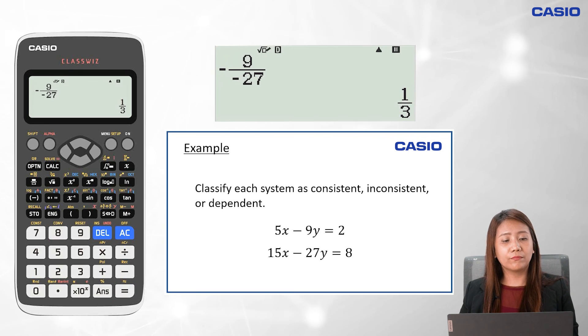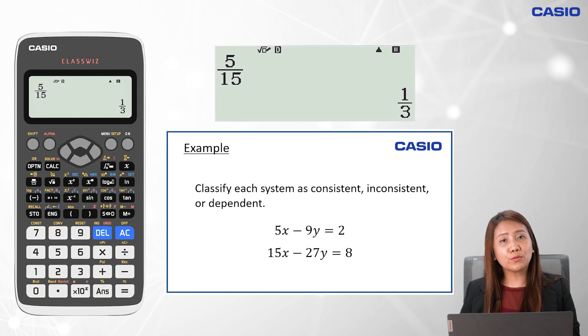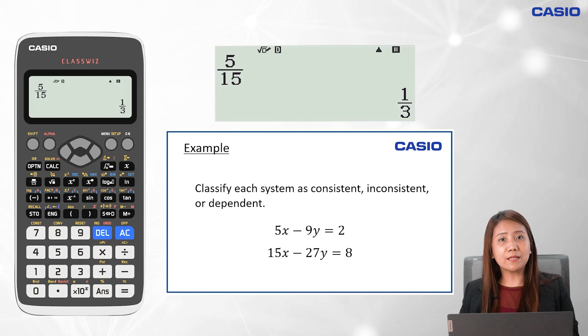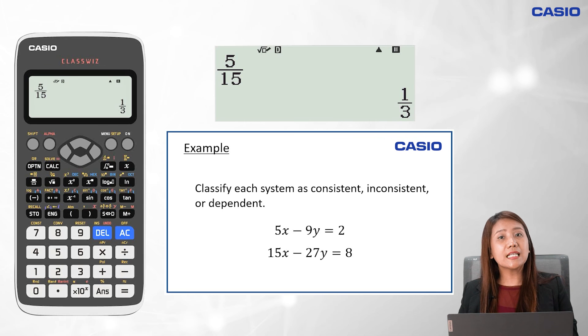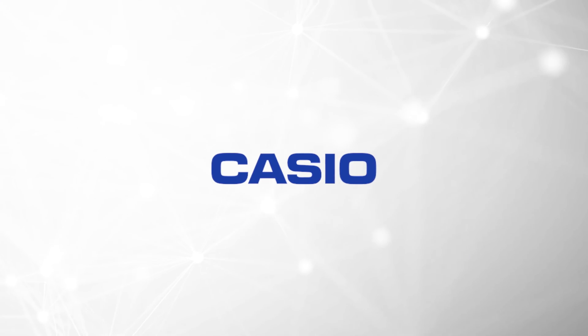5 over 15 is 1 third. Negative 9 over negative 27 is 1 third. 2 over 8 is 1 fourth. Since the ratio of the coefficient of x and the coefficient of y are equal, but the ratio of the constant term is not equal, therefore the graph defines parallel lines for this system. This means the kind of system we have is an inconsistent system. That's it for now. We are positive that our teachers will be able to share this wonderful learning experience with our students. Here we go.